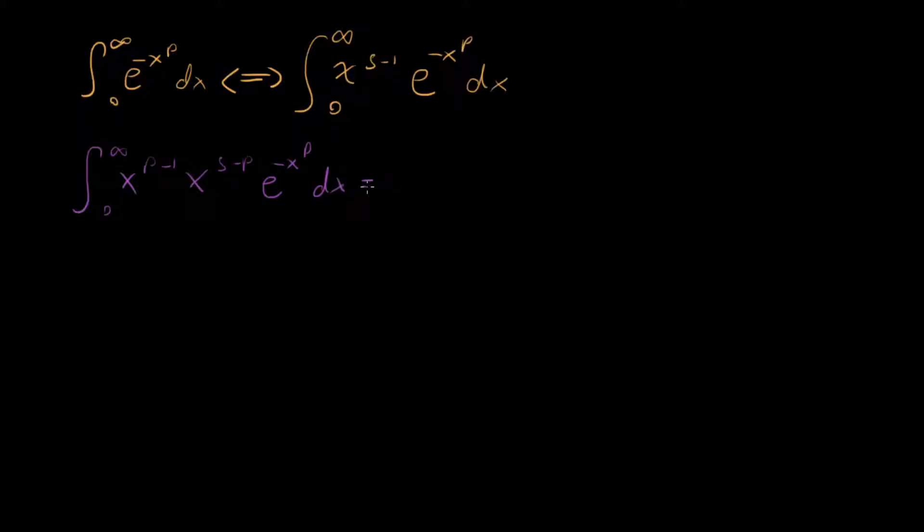Nothing illegal done yet. And then let's do one more thing. Leave our x to the p minus 1, but I'm going to factor out a factor of p here. Or rather, I'm going to rewrite this like this: x to the p times s over p minus 1 e to the minus x to the p dx.